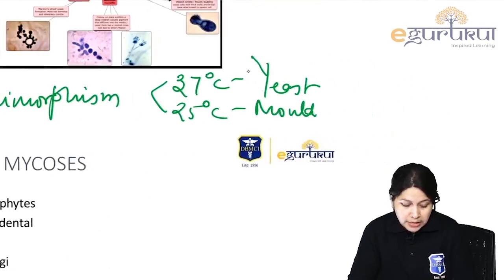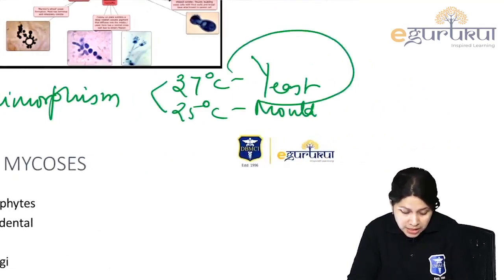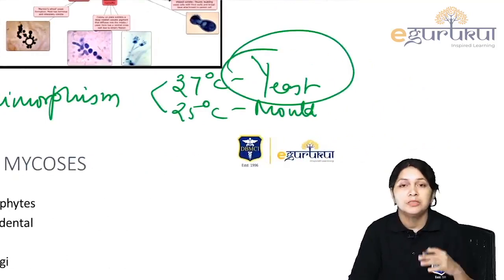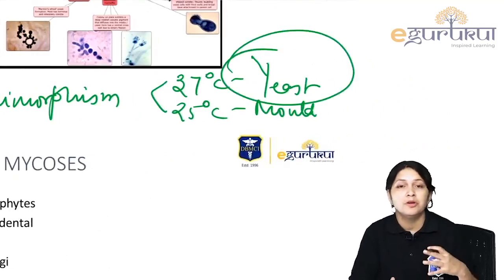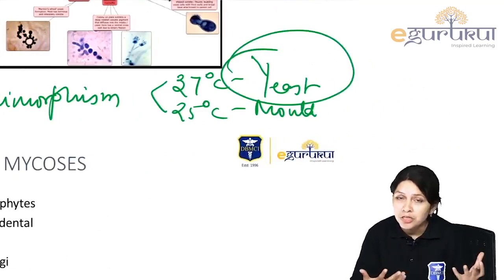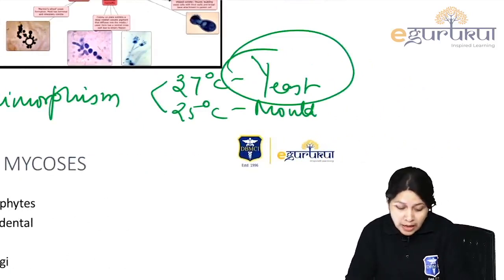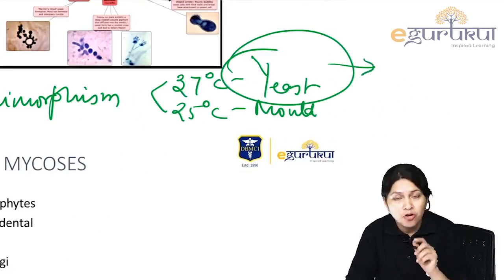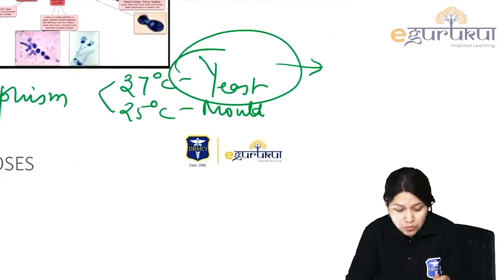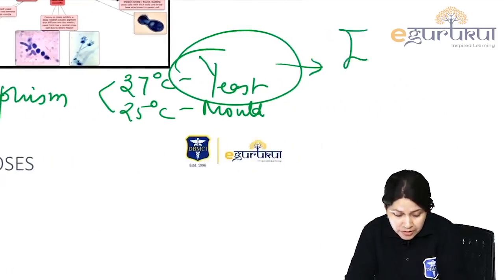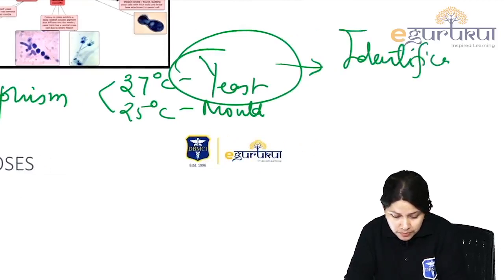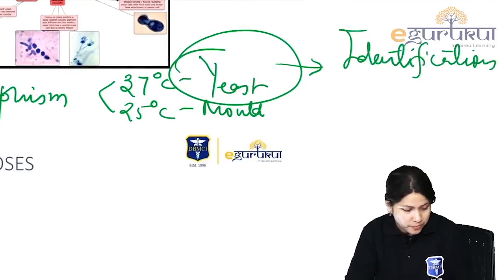The yeast form is important because from the body you obtain the specimen and the characteristic yeast form is used for identification.